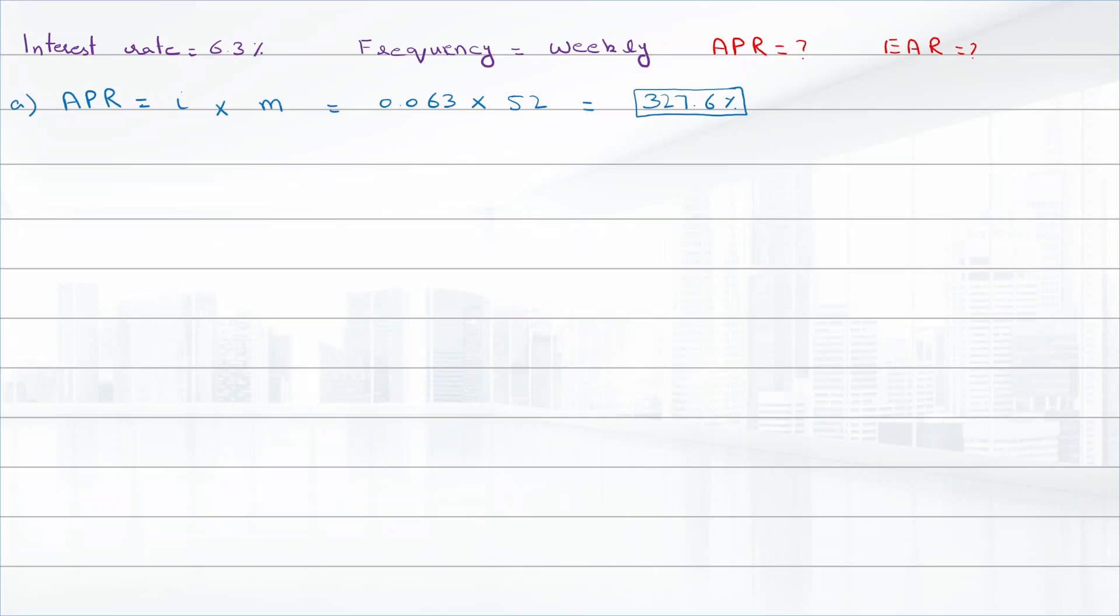Next we have to find EAR, that is equal to (1 + APR/m)^m - 1. That will be equal to (1 + 0.063)^m - 1, that is equal to 2297.34 percent.